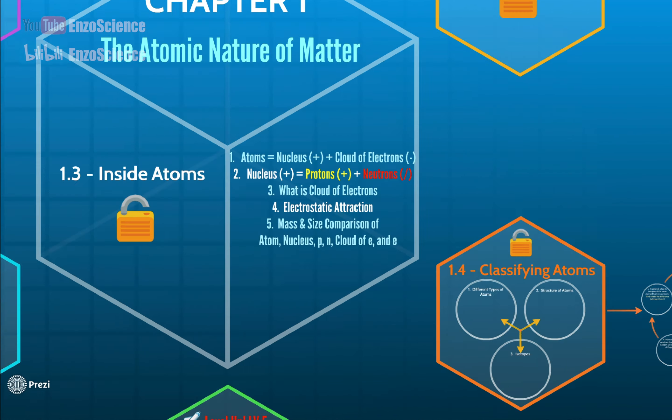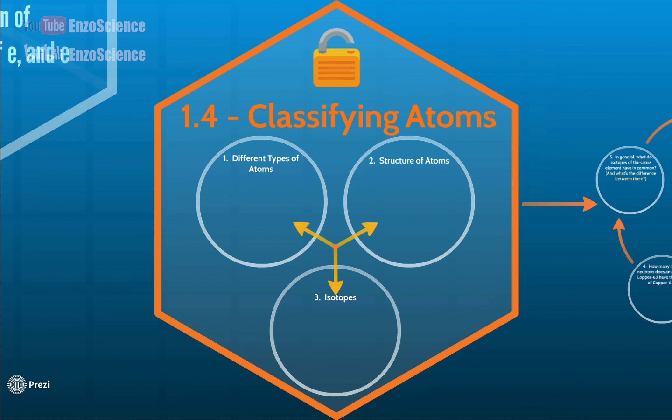Now let's move on to today's topic, section 1.4, classifying atoms. In this section, we will cover three points: how we identify different kinds of atoms, how we present an atom's structure, and what are isotopes. Then I will test your understanding with five exercise questions.